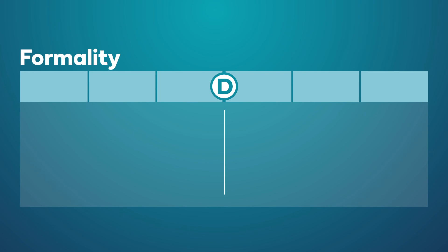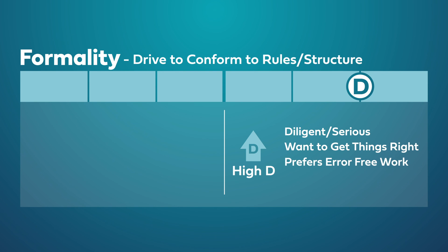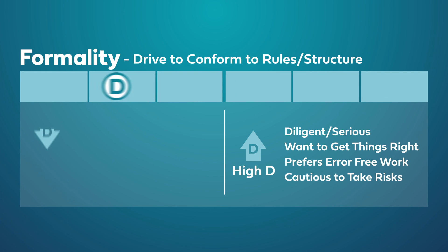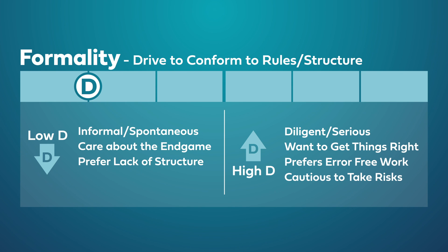Formality, identified by the letter D, is the drive to conform to rules and structure. Someone with a high D takes a diligent and serious approach to their work — they are conscientious about getting things right and motivated to produce error-free work. As a result, they are cautious and hesitant to take risks. Whereas someone with a low D is informal, casual, and often spontaneous. They are more concerned with the end game — what results are achieved rather than how results are achieved. They operate best unscripted and thrive when there's a lack of structure, more freedom, and a need to be creative in the approach.